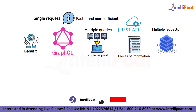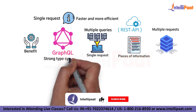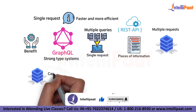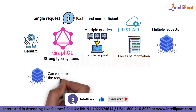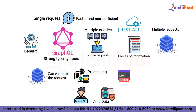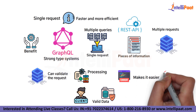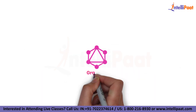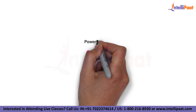GraphQL also has strong type systems, which means that the server can validate the request before processing it, ensuring that the client is asking for valid data. This reduces the number of errors and makes it easier to debug the application.